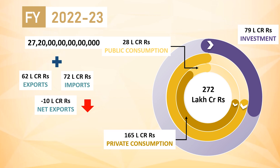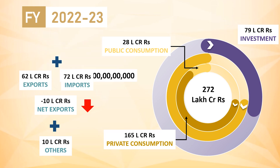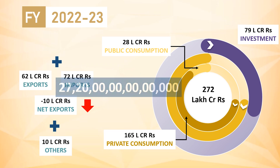After adding other minor components like change in stocks, discrepancies, etc., we arrived at the total value of GDP for India, which is about 272 lakh crore rupees.